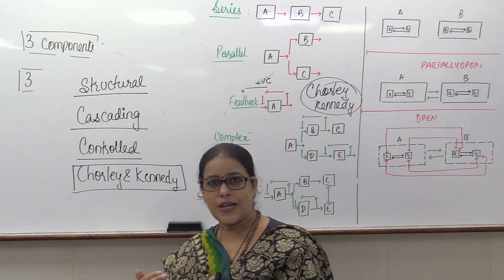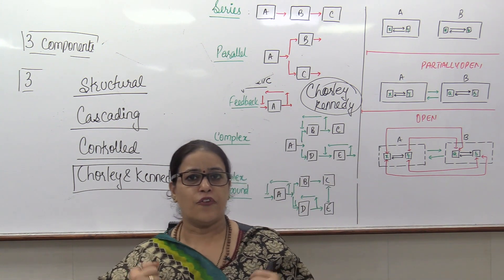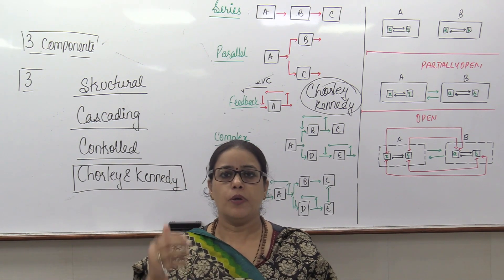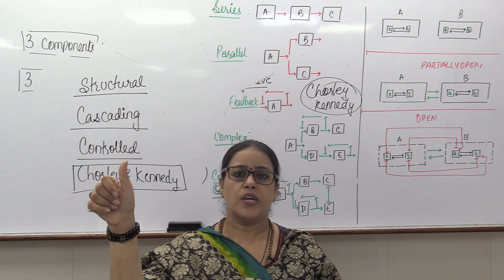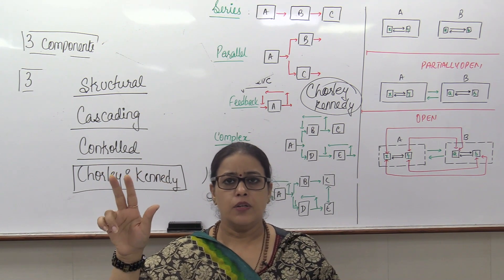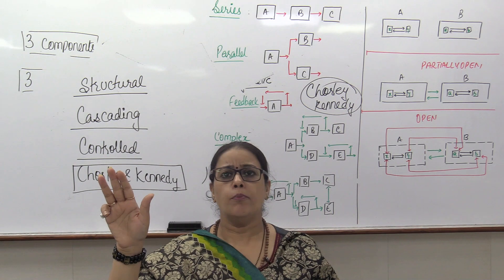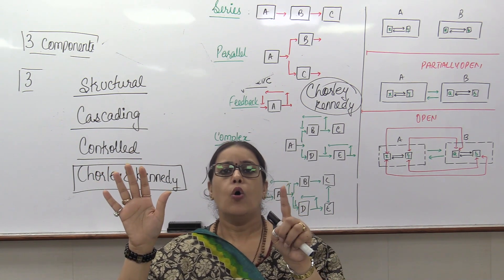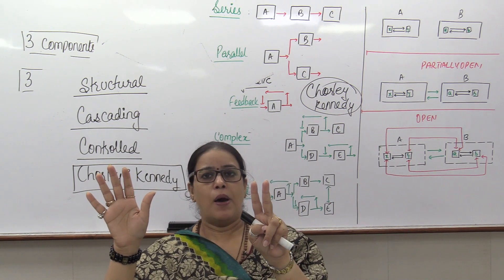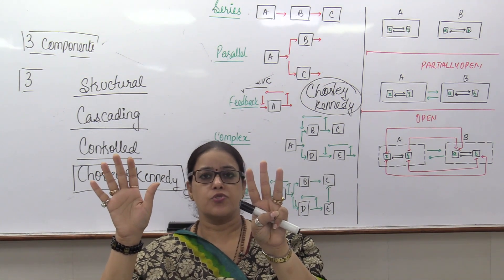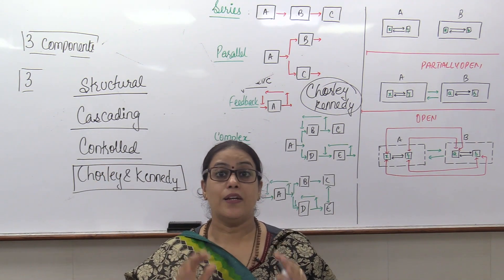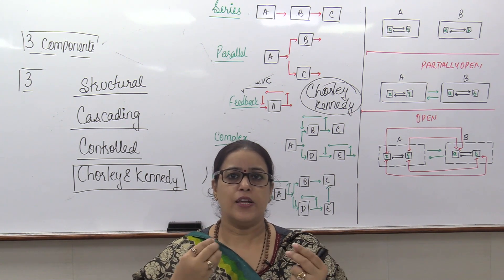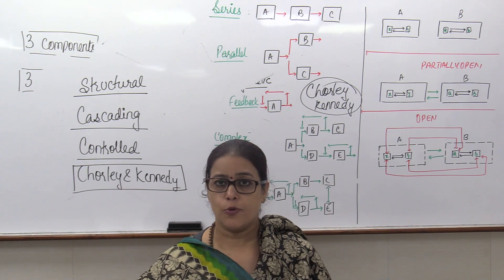When we talk about functional categories of system, the first thing that I need to be aware of how many systems we believe in. So, we believe in number one sequential, number two parallel, number three feedback, number four complex, number five complex compound, number six open, partially open, closed. So, I have got eight different types of systems. If I am aware of it, I can easily fit an example to prove the validity of systems approach.